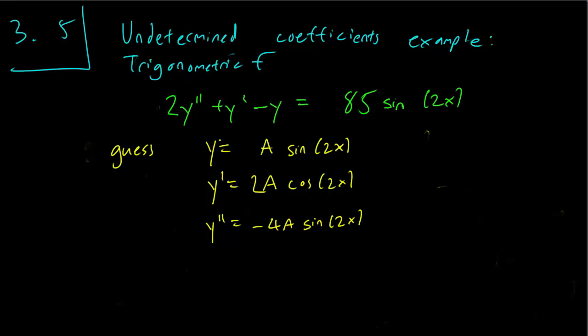The problem here is that y, y double prime, and the right hand side all contain sine terms, but the y prime is the only cosine term. And this means that A is going to have to be 0, which means our solution is just the 0 solution. And it's not even a solution anyway because we have 0 equals 85 sine 2x, so this clearly doesn't work.